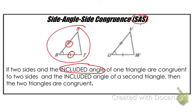The included angle is in between the two sides that are marked congruent. So just to be clear about what included angle means. Now if two sides and the included angle of one triangle are congruent to two sides and the included angle of a second triangle, then the two triangles are considered congruent.